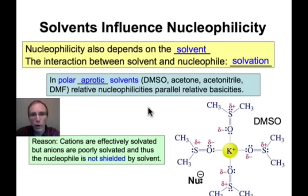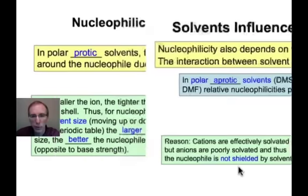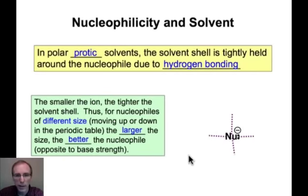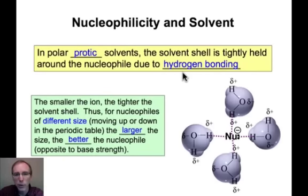Before we move on, take note that for aprotic solvents, the interaction is between the solvent and the counterion. Now compare that to the case with protic solvents. In the case of protic solvents, hydrogen bonding takes place, and that hydrogen bonding is with the nucleophile itself. The strength of that hydrogen bond is going to depend on the anion's size.